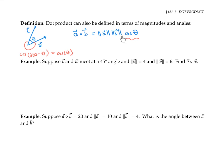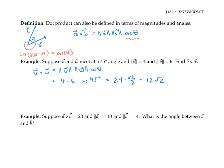Let's use this alternate definition in an example. Suppose v and w meet at a 45-degree angle and have lengths four and six respectively. Then v dot w equals the length of v times the length of w times cosine of 45 degrees — that's four times six times the square root of two over two, or 12 root two.